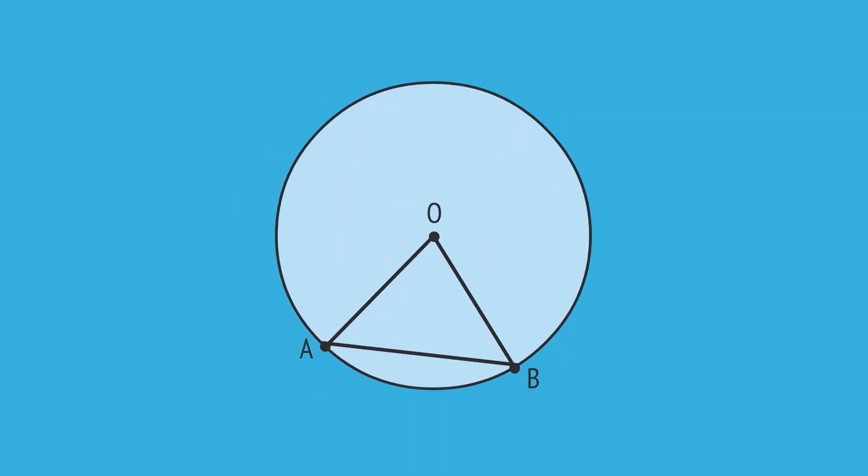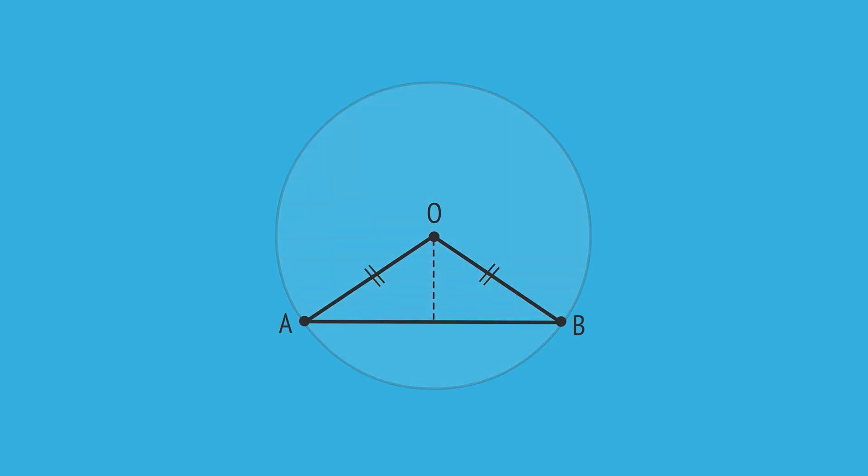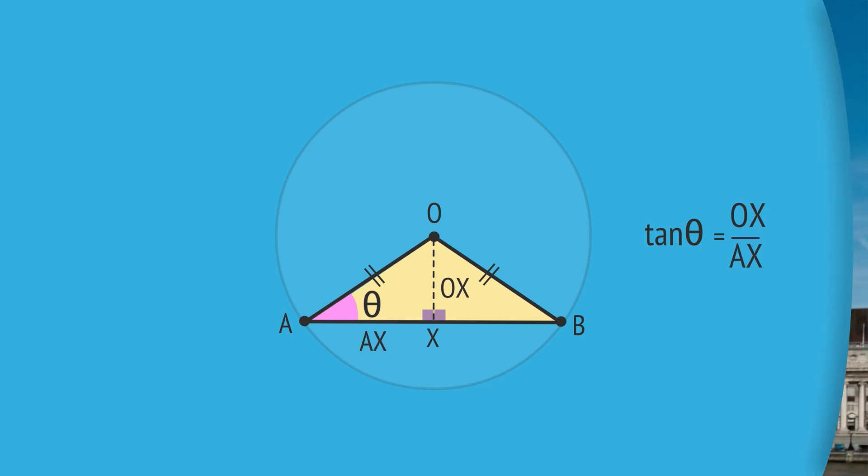And given any isosceles triangle formed by two radii and a chord, we can draw the perpendicular bisector of the triangle's base to split the triangle into two right-angled triangles. And once again, we can write trig ratios, like the tangent of this angle theta, equal to the opposite, OX, over the adjacent, AX.